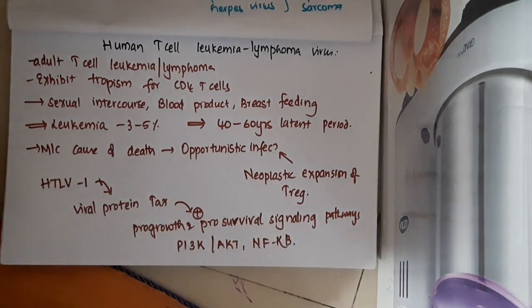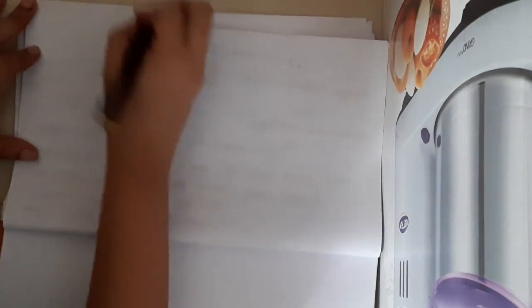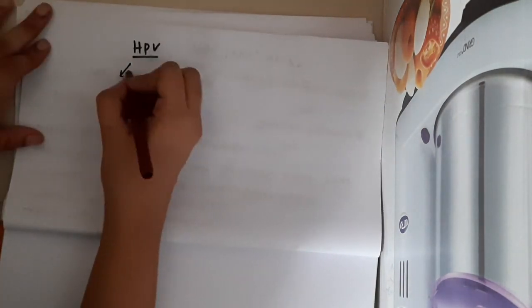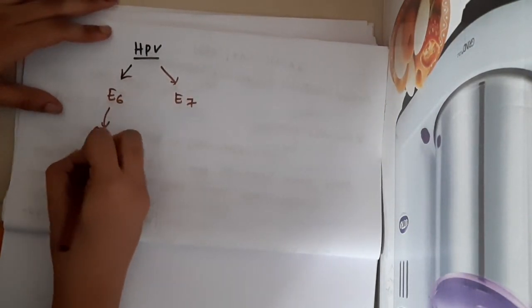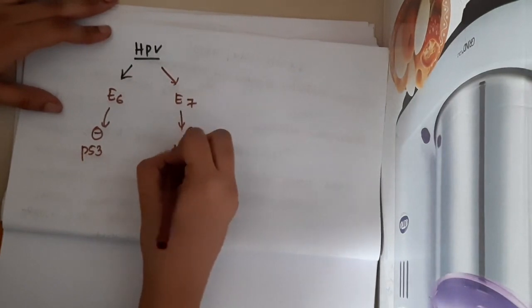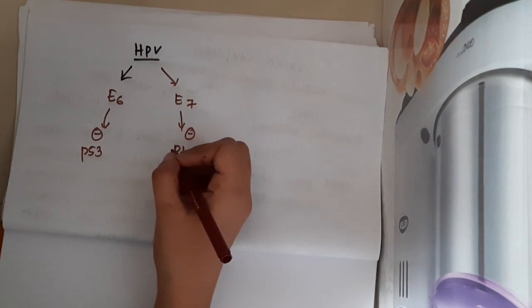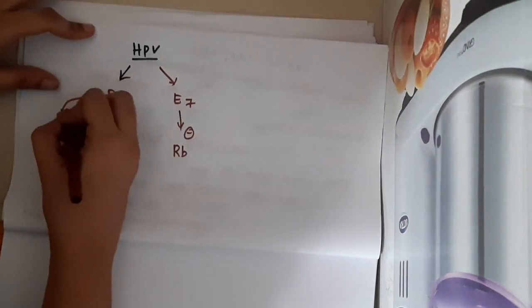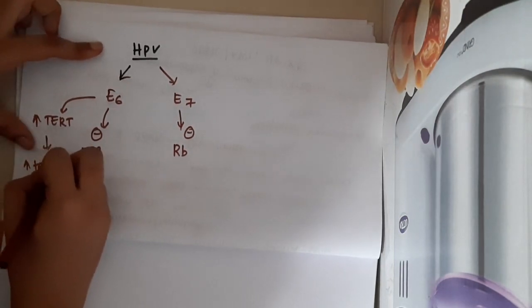Now let us learn about human papilloma virus. HPV has two important proteins: E6 and E7. E6 inhibits p53 and also increases telomerase expression, whereas E7 inhibits retinoblastoma.